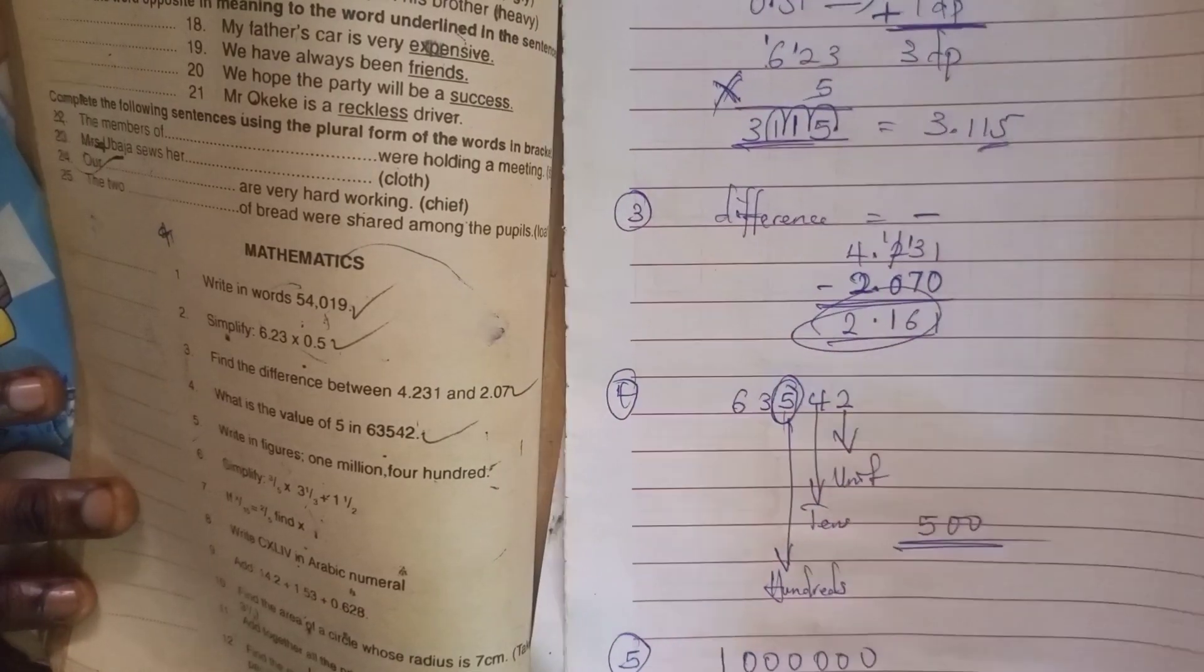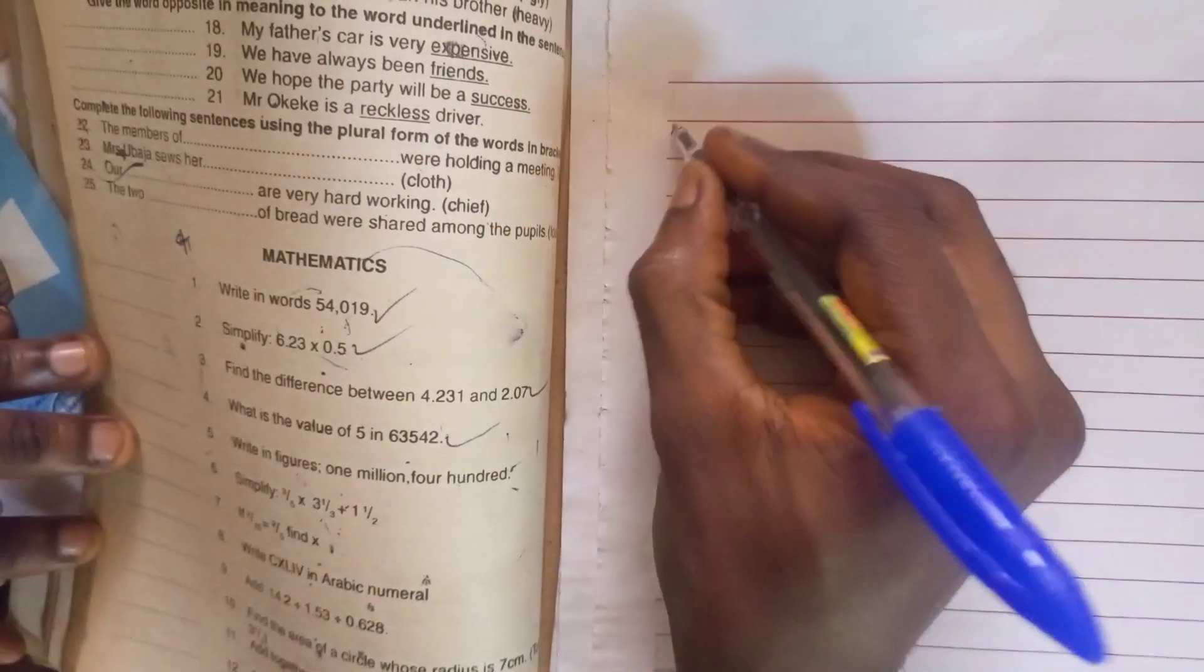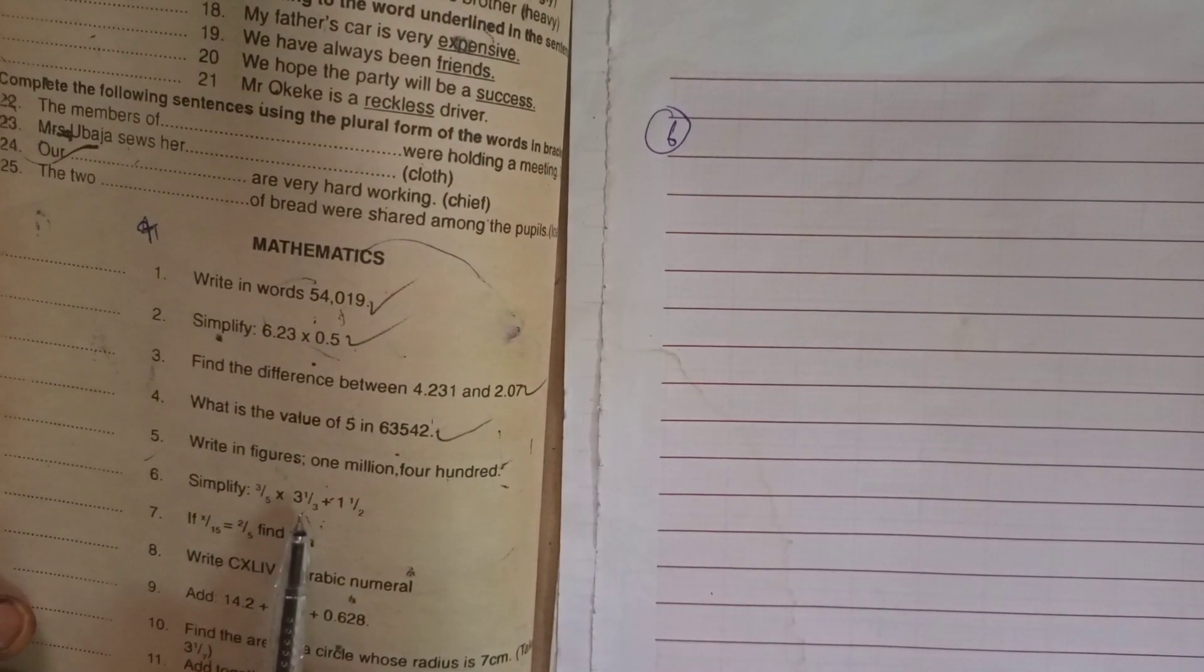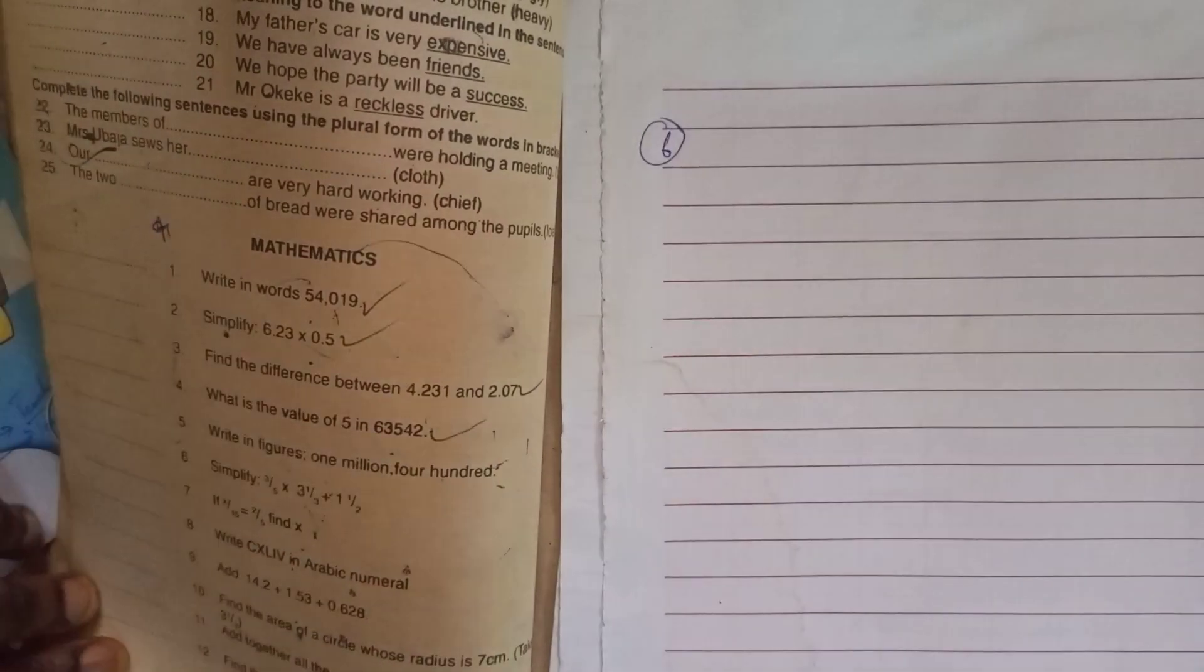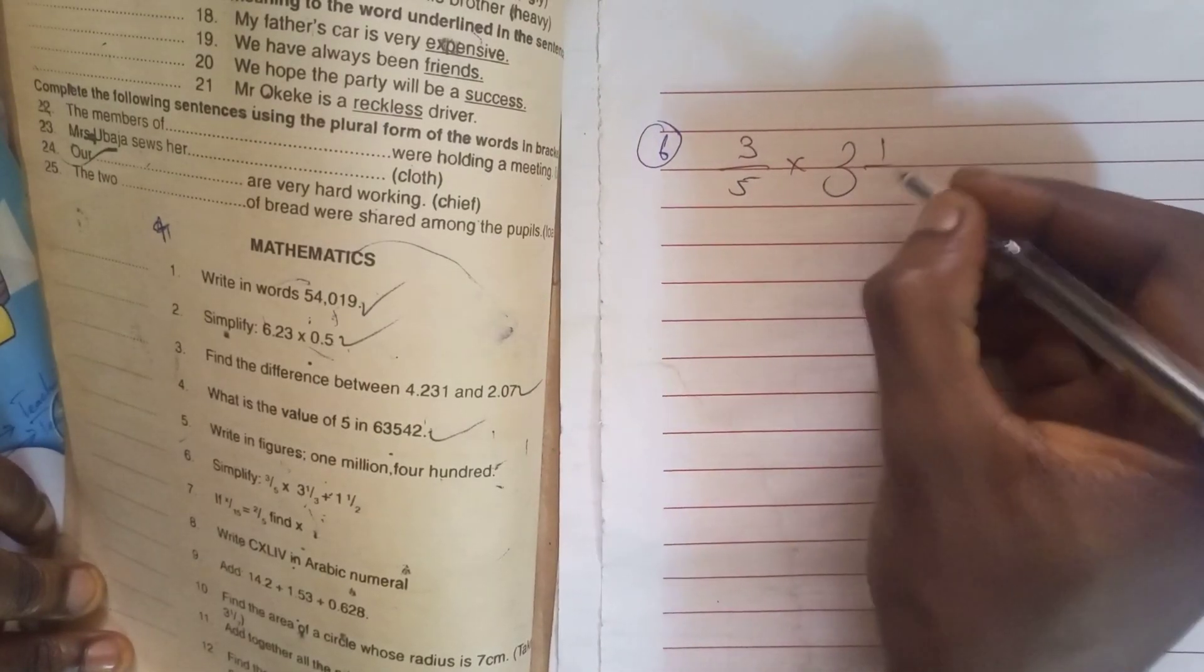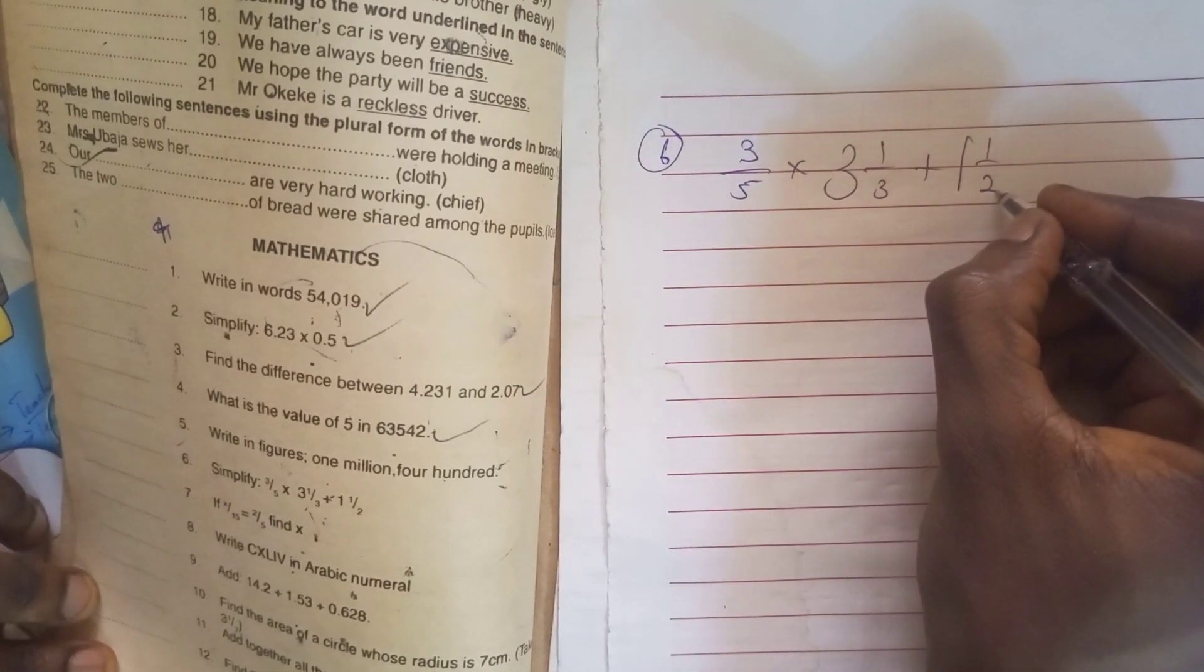Another part of the question is number 6. Number 6 is simplify 3 over 5 times 3 whole number 1 over 3 plus 1 whole number 1 over 2. So write 3 over 5 times 3 whole number 1 over 3 plus 1 whole number 1 over 2. We are asked to simplify it.